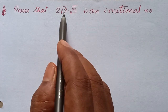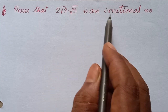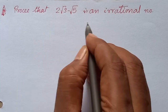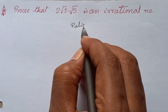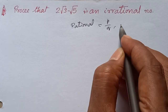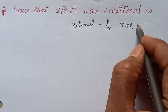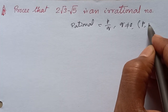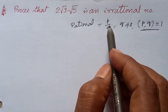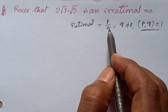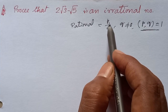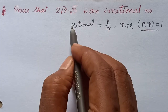Prove that 2√3 - √5 is an irrational number. We know that a number which is rational can be expressed in the form p/q where q ≠ 0 and gcd(p, q) = 1, that is there is no common factor except 1 between p and q. In other words, p and q are prime to each other, or co-prime.